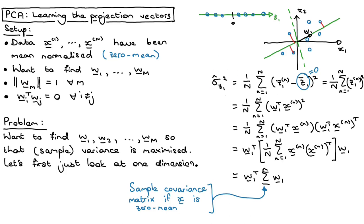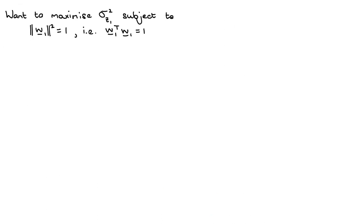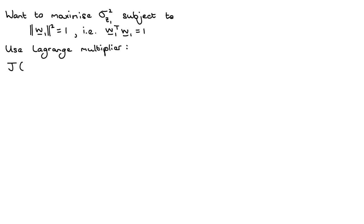So we need to maximize this expression subject to the constraint that W1 has unit length. This is where we use Lagrange multipliers. The unit length constraint can also be written as W1 transpose W1 equals 1 — these two forms are equivalent. Writing it this way makes it easier to differentiate.